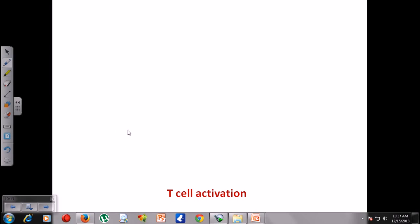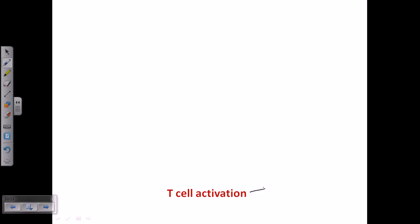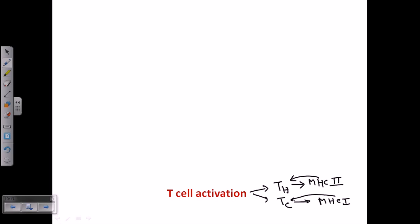Welcome again friends. In this video we'll be talking about T-cell activation — both cytotoxic T-cell activation as well as T-helper cell activation. T-helper cells can be activated directly by contact with the MHC class 2 molecule, while cytotoxic T-cells can be activated directly via MHC class 1, or indirectly through interleukins released by T-helper cells. So cytotoxic T-cells have two activation pathways, while T-helper cells have one.